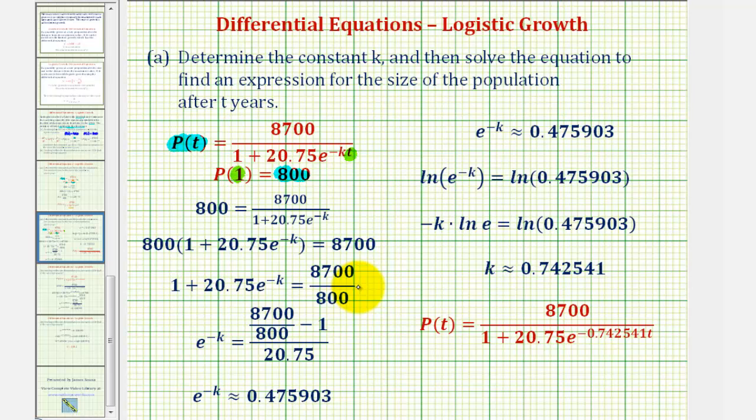From here, we'll subtract 1 on both sides, and then divide by 20.75, which gives us e^(-k) equals this quantity here, which I've already evaluated in the calculator. It's approximately 0.475903.